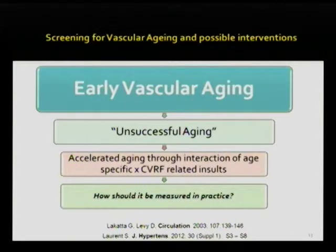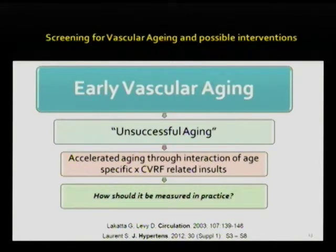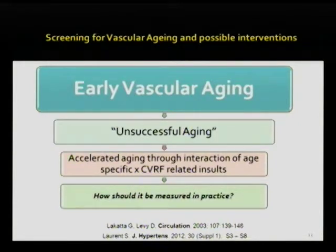If we had to define early vascular aging as a concept to pick out of the population the ones that are in the wrong path — unable to cope with the aggressions they suffer and going faster in the aging process — we could use it as a concept of unsuccessful aging, where the aging process is accelerated not only through the normal interaction of age-specific insults, but also through different cardiovascular risk factors. How can we measure it in practice?